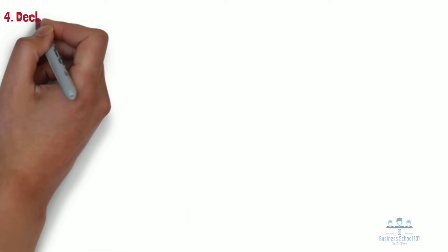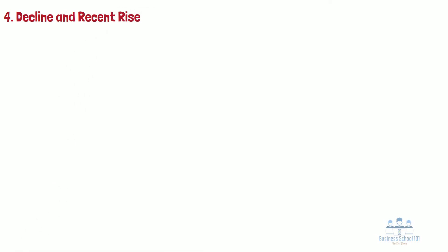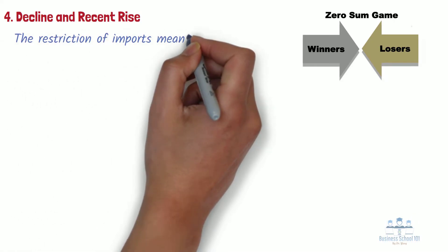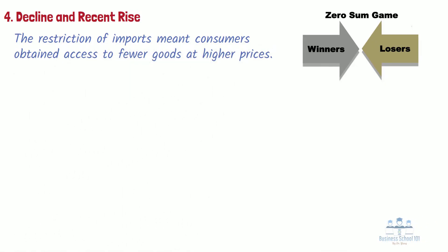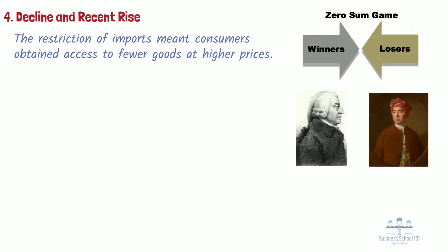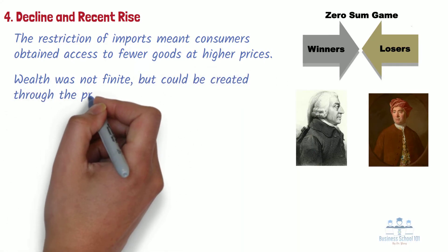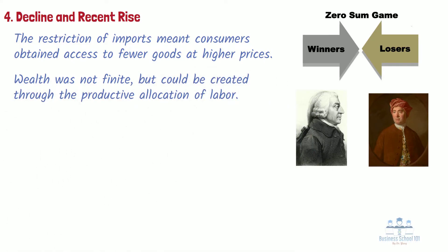Section 4: The Decline and A Recent Rise. The flaw with mercantilism was that it viewed trade as a zero-sum game. Under a mercantilist system, the restriction of imports meant consumers obtained access to fewer goods at higher prices. By the end of the 18th century, scholars such as Adam Smith and David Hume began to evaluate and critique the merits of mercantilist theory. Contrary to established beliefs, they realized that wealth was not finite, but could be created through the productive allocation of labor. When countries specialize in the production of goods for which they enjoy a comparative advantage, trade can result in mutually beneficial deals.